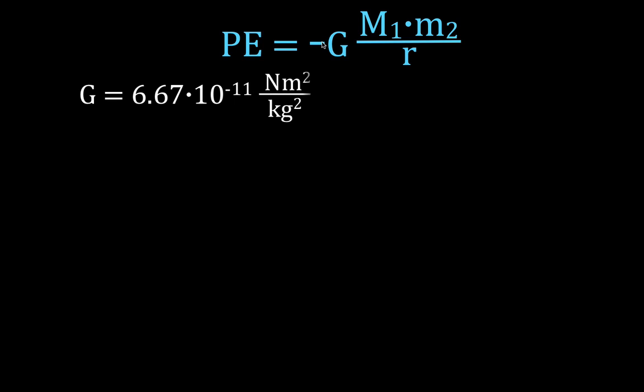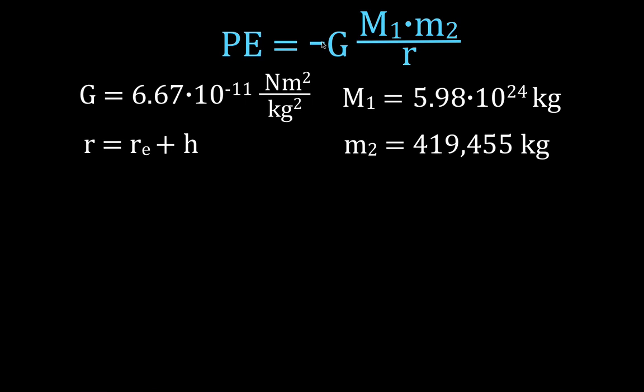So let's go. G is 6.67 times 10 to the minus 11 newton meters squared per kilograms squared. M1 is the mass of the Earth in kilograms. M2 is the mass of the space station in kilograms. And what is r? r is the radius, it's a circular orbit, and that radius is measured from the center of the Earth, not just the height, so we have to take the radius of the Earth plus the height, and that gives us the total distance for r.